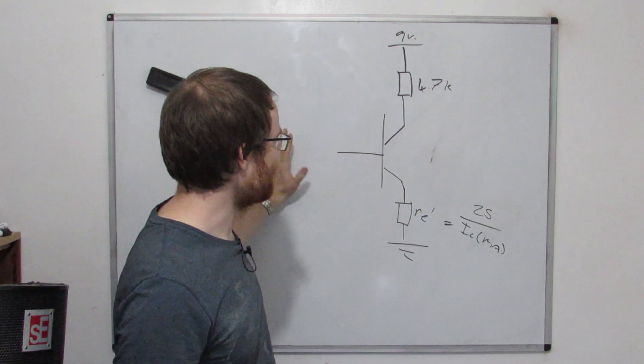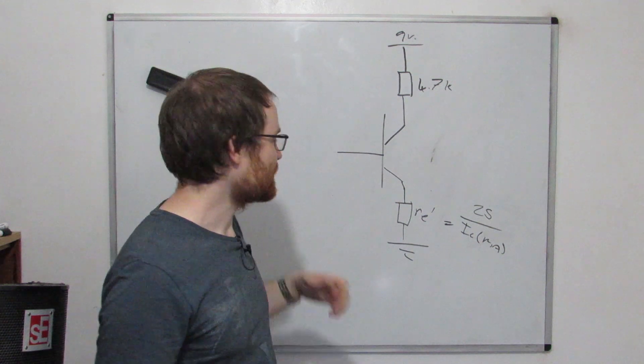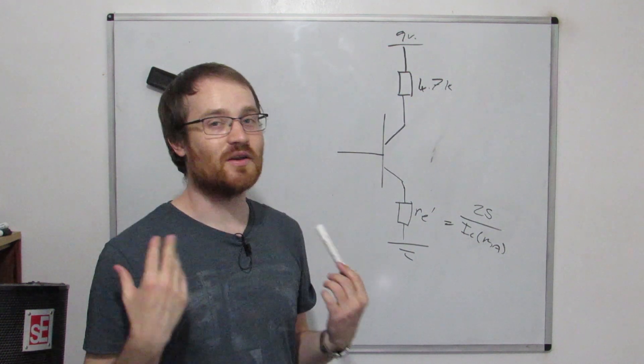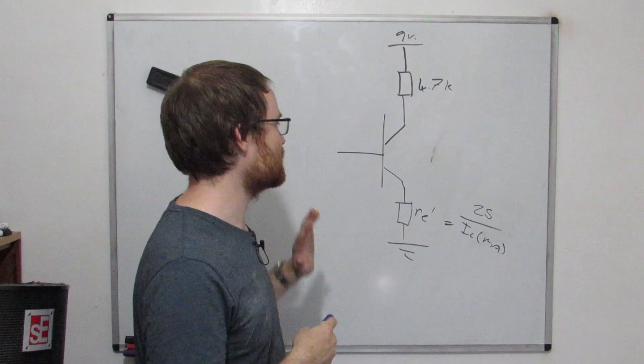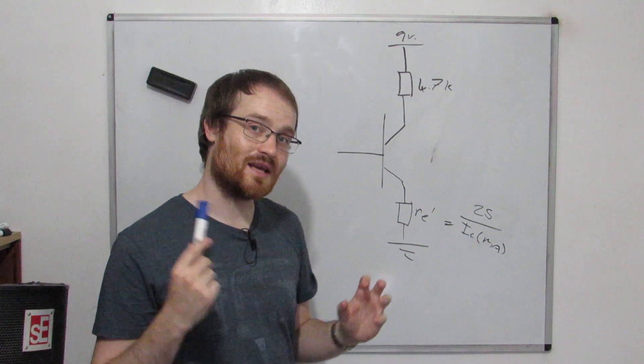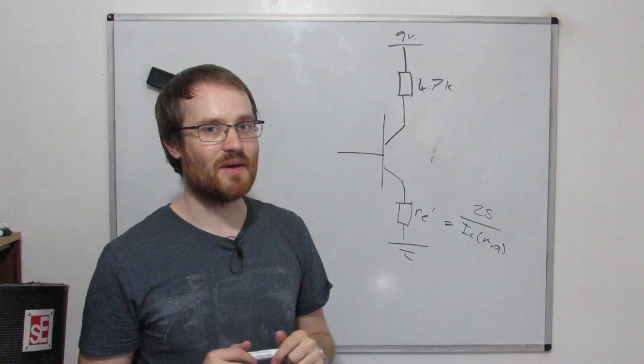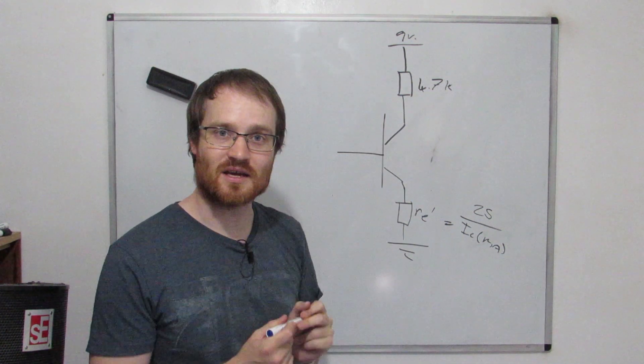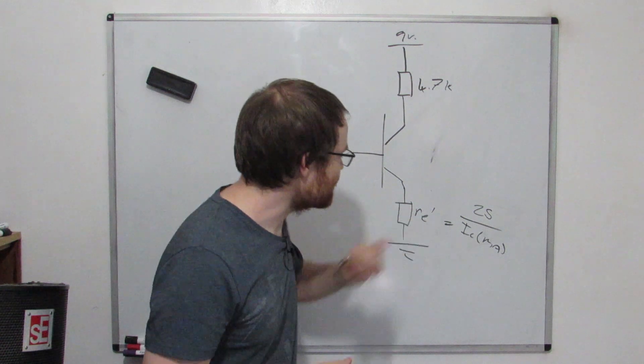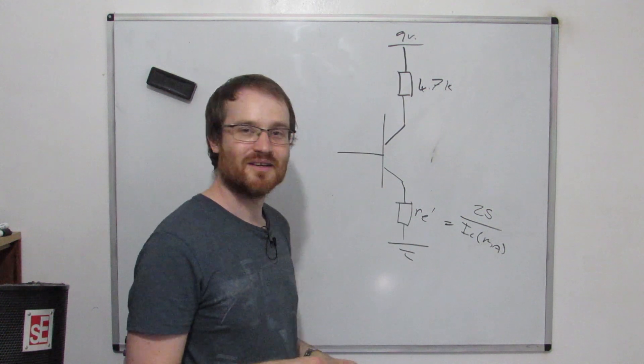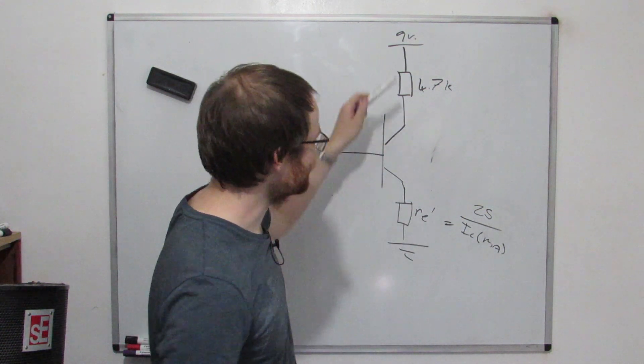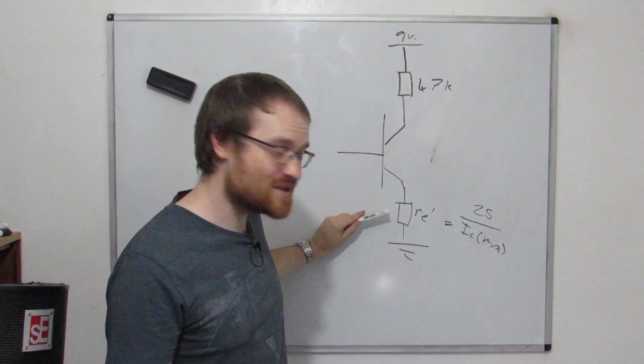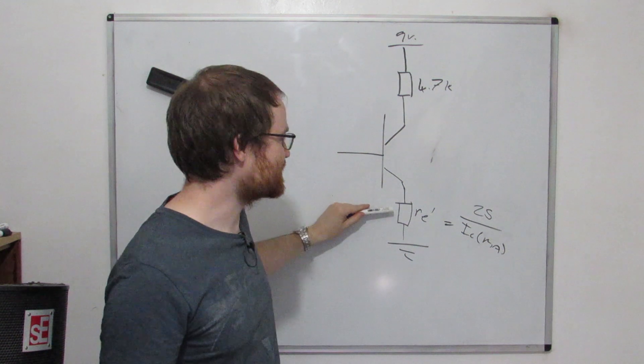With no emitter resistor here to set the current, the current is set by the base voltage and it's an exponential factor of that base voltage. I don't want to go into the maths of it all because we don't need to, but what that means in English is that small changes in the base voltage will cause huge variations in the collector current. As we know, our RE prime is dictated by that collector current. And as we also know, the gain of our circuit is the ratio of these two resistors. With no emitter resistor, this is now our emitter resistor.